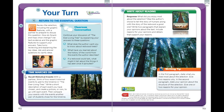Once you've done that, you're going to have a writing response. What did you enjoy most about the selection? Was the author's choice to tell the story of humans along with the story of the redwood a good one? Write two paragraphs that explain your opinions about the text, including reasons for your opinions and details that support your reasons. You can do this in your composition notebook or on a clean piece of lined paper. In the first paragraph, state what you liked most about the selection, giving two reasons why. In the second paragraph, state your opinion about the structure of the selection and give one or two reasons for your opinion.